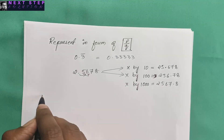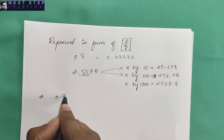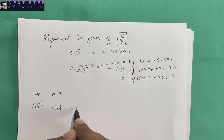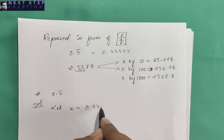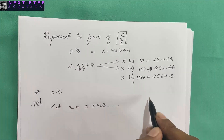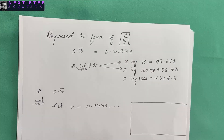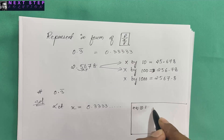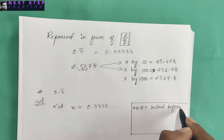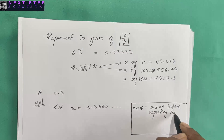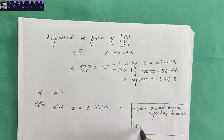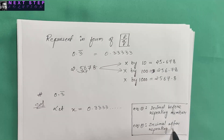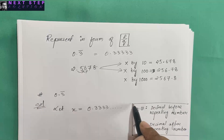To represent 0.3 bar as p by q, call it x. Let x equal 0.3333 going on. We are going to make two equations: equation one will have the decimal immediately before the repeating digit, and equation two will have the decimal immediately after the repeating digit.